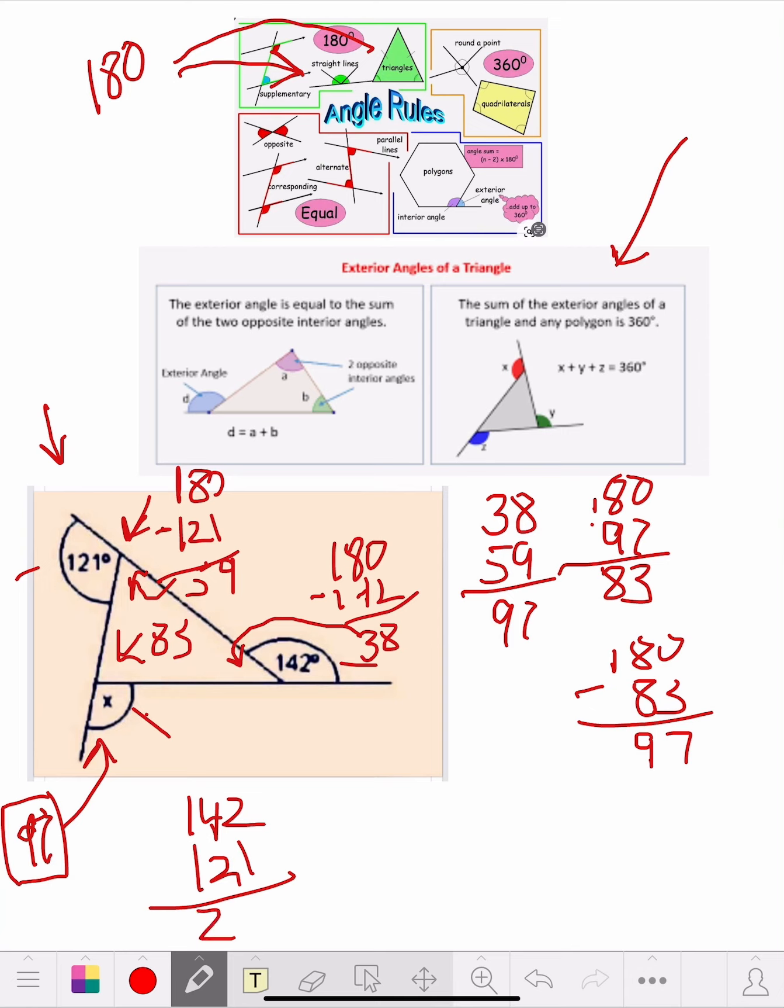That's adding up to 263. You know, the whole thing is going to be 360. So we've got 360, 360 minus 263, 97.